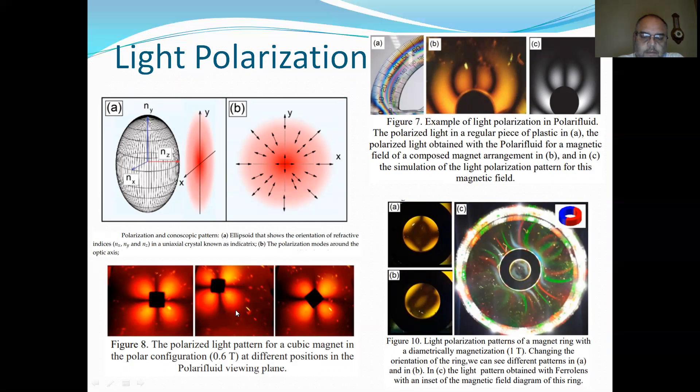As you can see here, this is a magnet. This is a ferrofluid between polarizer and analyzer. And when you displace the magnet, you can see the pattern following the magnet.